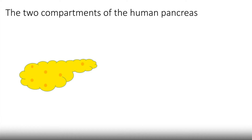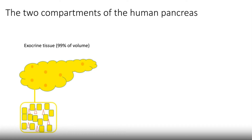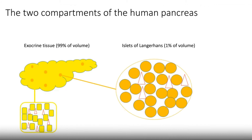The exocrine tissue consists of parenchymal cells interspersed by a rich network of capillaries. The hormone-producing part — the islets of Langerhans — makes up just 1% of the organ and is randomly distributed throughout it. Similar to the exocrine tissue, islets essentially consist of parenchymal cells with a rich capillary network.